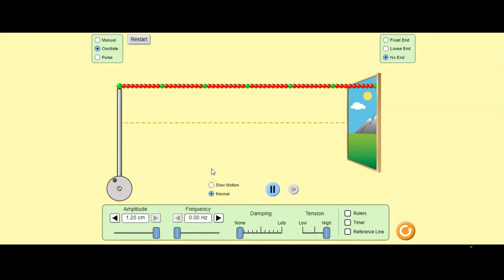Here we have the PhET oscillation simulation. I want to show you a few things. So the amplitude of this wave is the measure of where the wave height is against this baseline which is this dashed line right here.